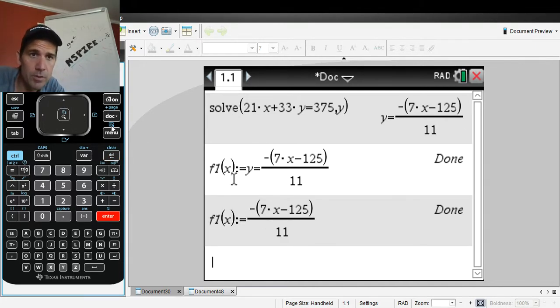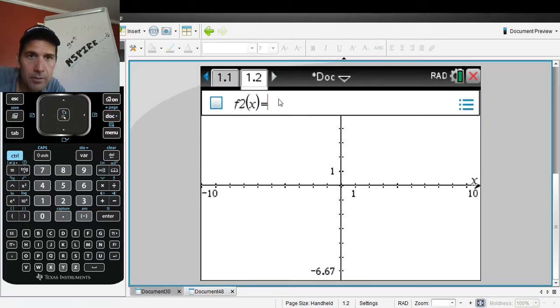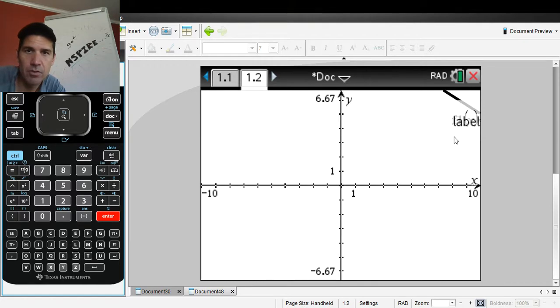Now what we can do is I'm going to go over to my graphing menu so that I can open up a table. So I'm going to go to graph, and then if I scroll up, because this is F2, I want F1. There's my F1. Hit enter, and it graphs it for you. You can't see it all that well, but that doesn't matter.